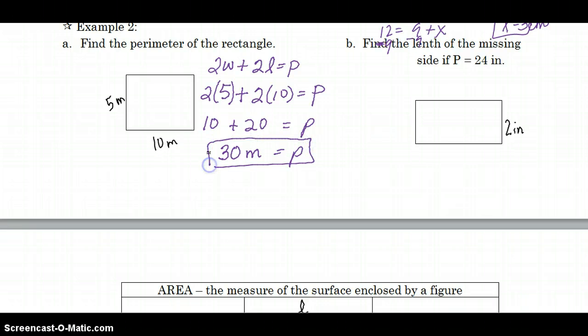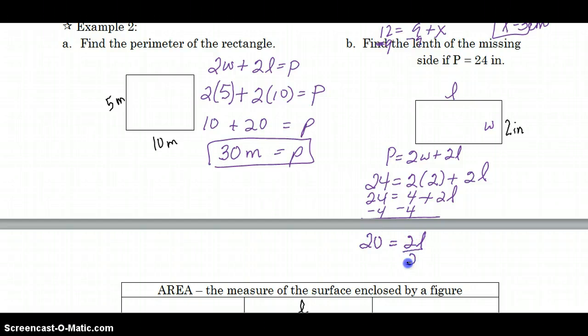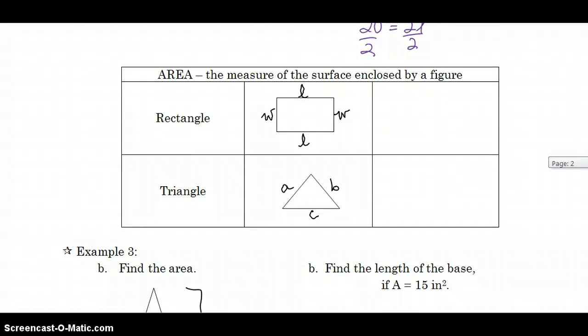Now in Example B, find the length of the missing side. So I have here W. It's going to be L that I'm looking for. If perimeter equals twice the width plus twice the length, then 24 equals twice the width, which is 2, plus twice the length. Now I'm going to have a two-step equation because I will need to isolate L by subtracting 4 first. So 20 equals 2L. Now I need to divide by 2, and our length is going to be 10 inches. I hope I'm not going too fast. Feel free to pause or rewind whenever you need to.